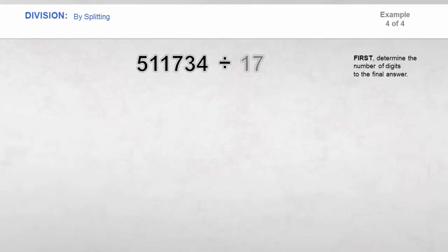This technique is very effective under the right situations. Keep in mind that each part of the split must be evenly divisible by the divisor. Let's determine the number of digits in the final answer before we solve. Add zeros to 17. In this case, we need 5 zeros for the divisor to become larger than the dividend.